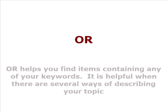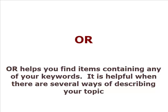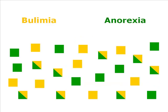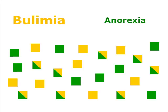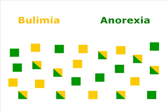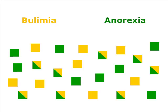Next, let's look at the OR Boolean operator. OR helps you find items containing any of your keywords. It is helpful when there are several ways of describing your topic. The yellow blocks are items discussing only bulimia, and the green blocks are items discussing only anorexia. The two-tone blocks are items discussing both concepts. If you are researching eating disorders, both of these keywords are good choices. Placing the OR operator between the two will return items containing either keyword or both together. In this case, all of the items here will be in your result list.